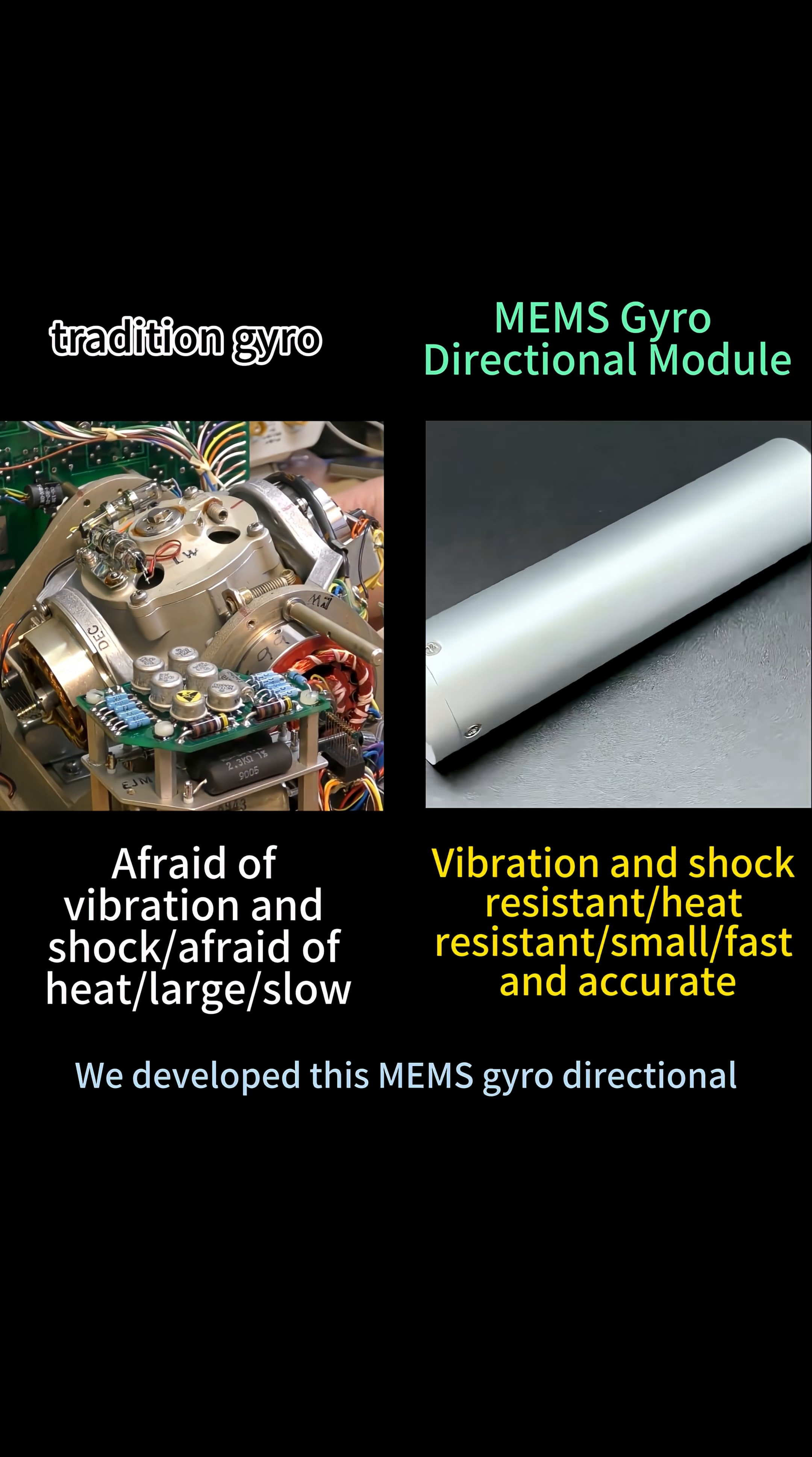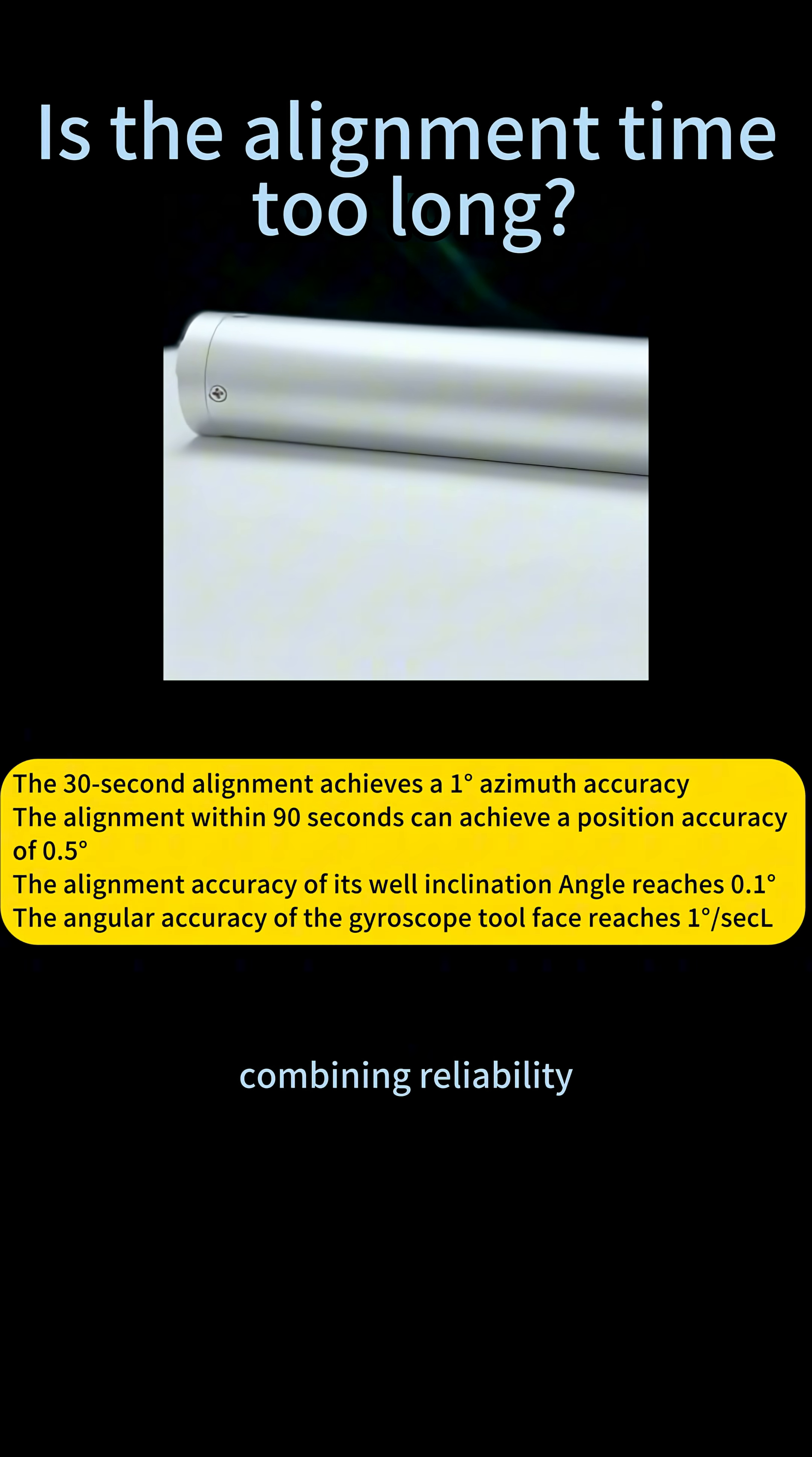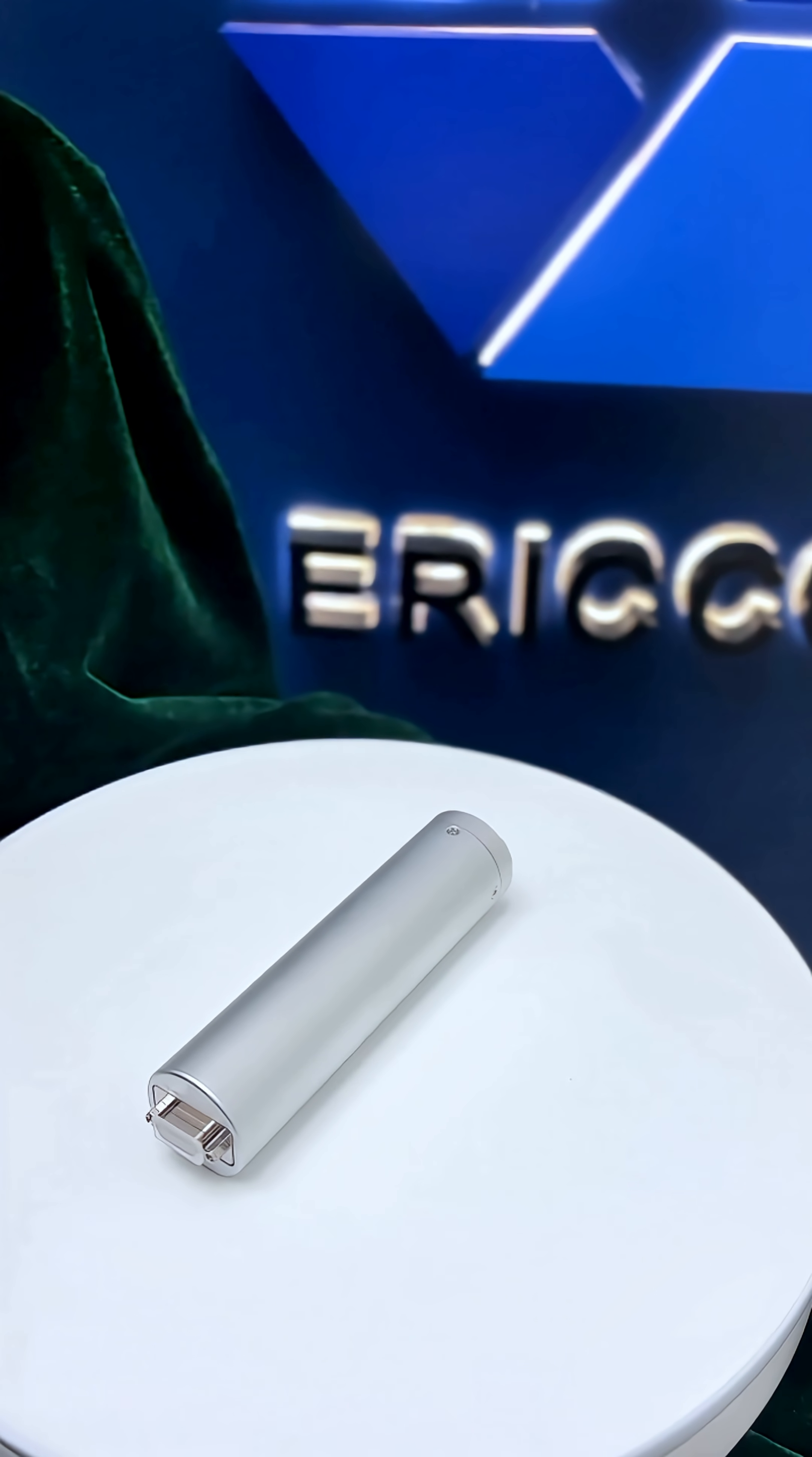We developed this MEMS gyro directional module thanks to the revolutionary advantages of MEMS gyros. It integrates high-precision MEMS gyros, accelerometers, and powerful data processing algorithms, combining reliability, compact size, and competitive cost. It solves the problem of precise, efficient, and reliable underground navigation, serving as a trustworthy compass for 10,000-meter drilling.